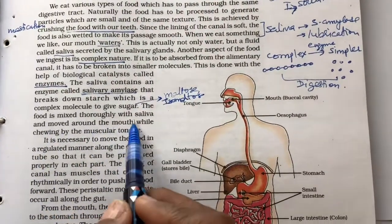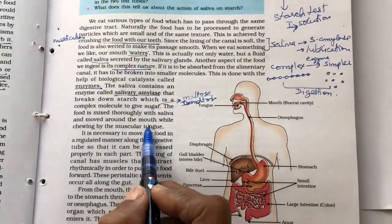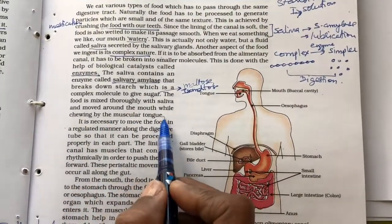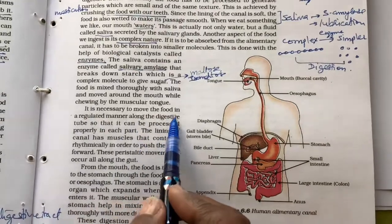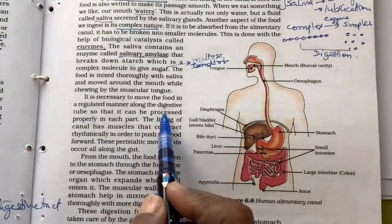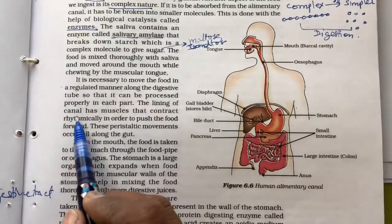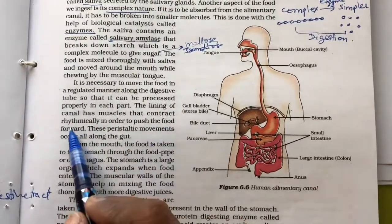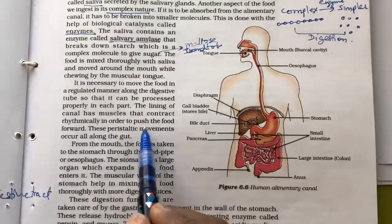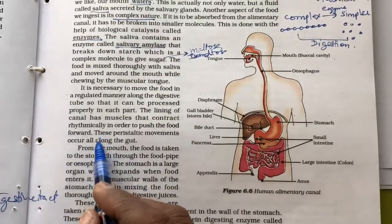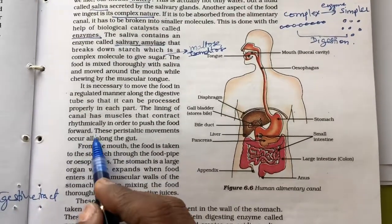The food is mixed thoroughly with saliva and moved around the mouth while chewing it by the muscular tongue. It is necessary to move the food in a regulated manner along the digestive tube so that it can be processed properly in each part. The lining of the canal has muscles that contract rhythmically in order to push the food forward. These peristaltic movements occur all through the gut.